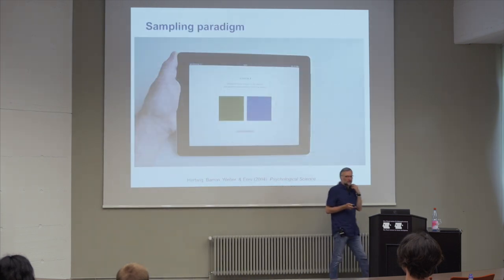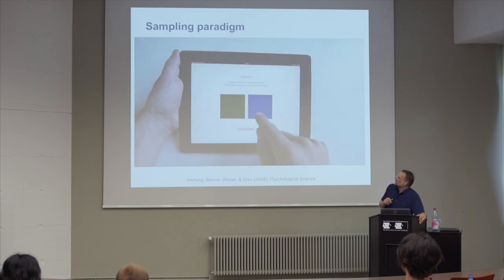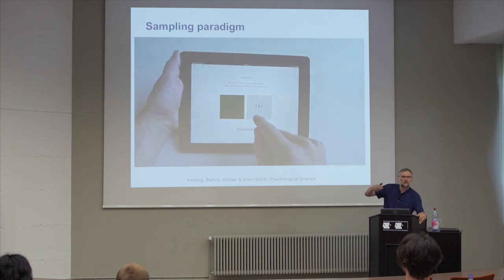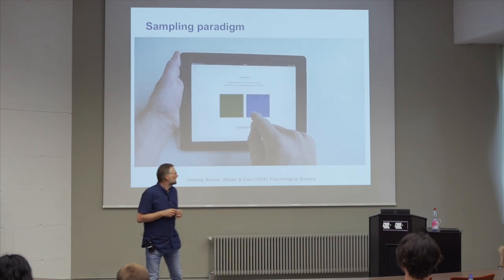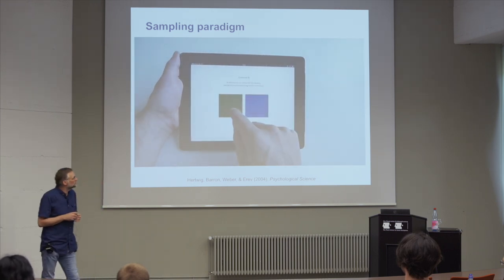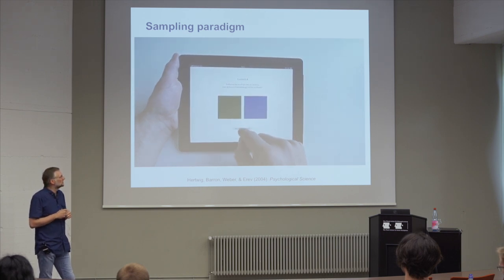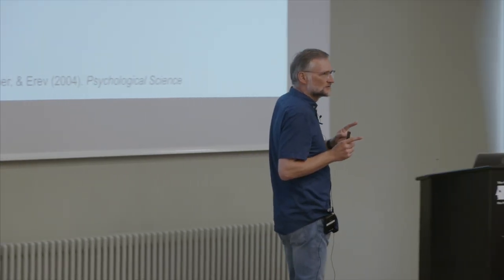Let me give you one example of how the sampling paradigm really looks. Basically, what people see are two urns. They press a button and look at the outcome — a random draw from the urn as a monetary outcome. Through seeing these outcomes, people can form a representation of the underlying probabilities. They can sample as long as they want and go back and forth. Once content with what they know, they stop and make a final choice, which is incentivized. So it's a very simple paradigm, but the difference is you don't get probability information — you need to infer the probability information from the sequence of outcomes, as it often is in the real world.